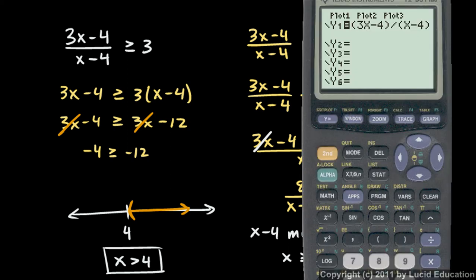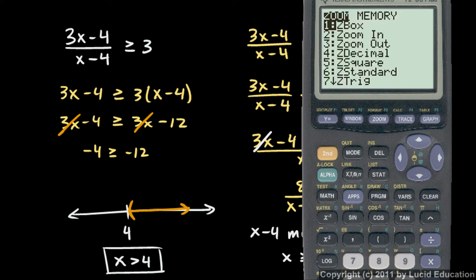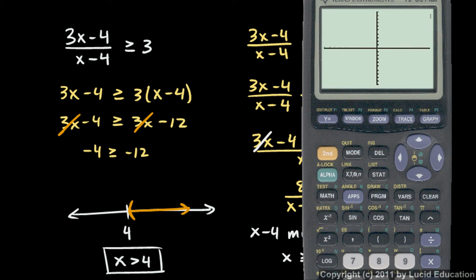Okay, and that's the answer. Let's look at it on the calculator real quick. I've put in the function there 3x minus 4 over x minus 4. That's the left side of my original problem. And I want to see where that is greater than or equal to 3. So let's just put this on standard zoom settings and watch it draw it. Okay, that's the graph.